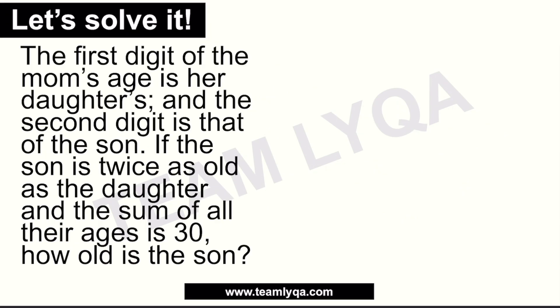How do we solve this? There are three people: the mom, the daughter, and the son. Their ages can be represented by x. Let's start with the daughter and the son since their relationship is simpler. The son is twice as old as the daughter, so the son equals two times the daughter's age.